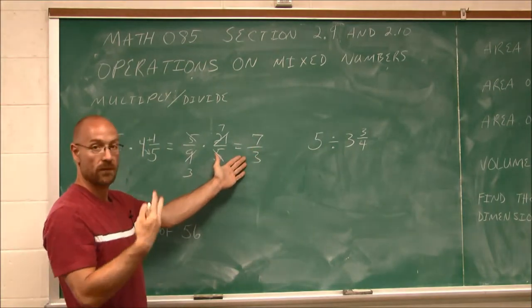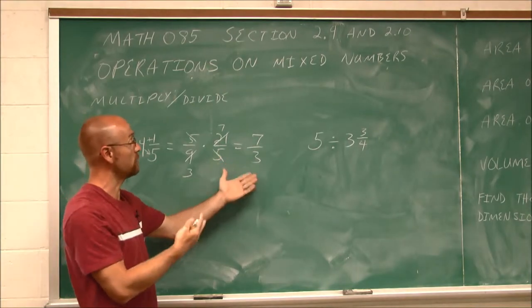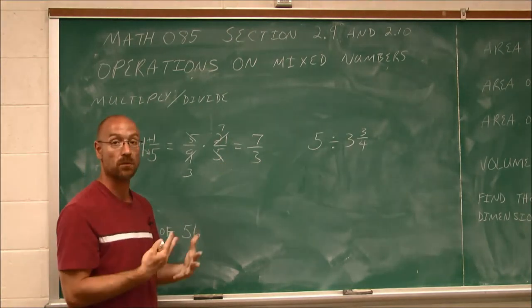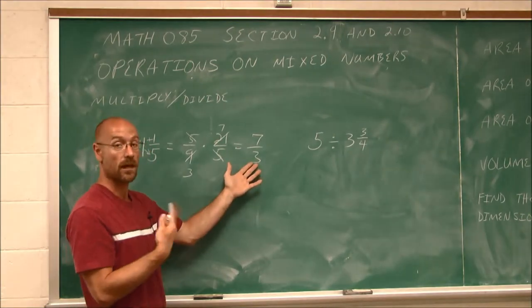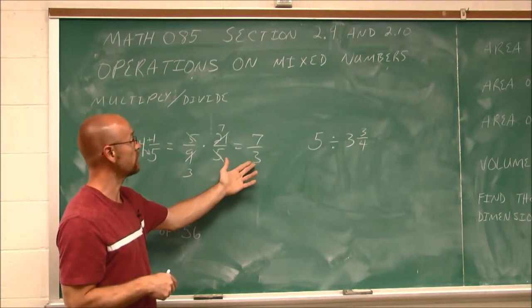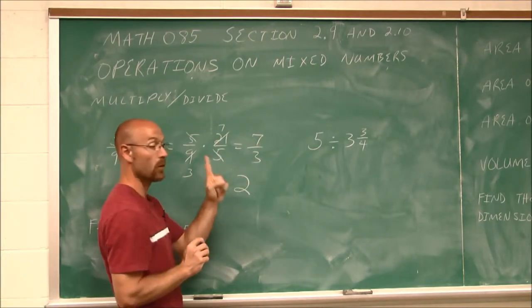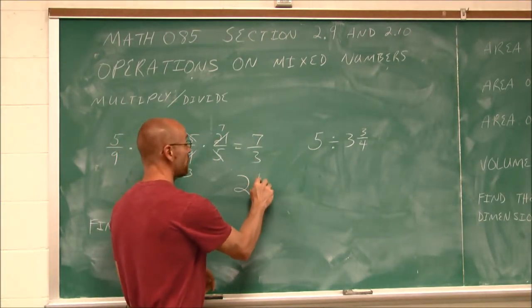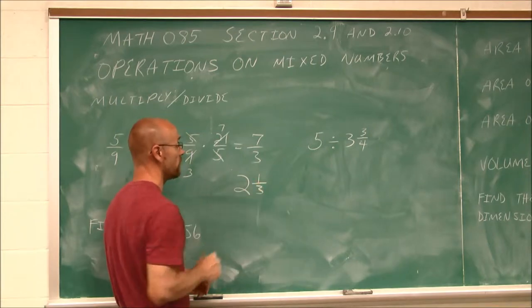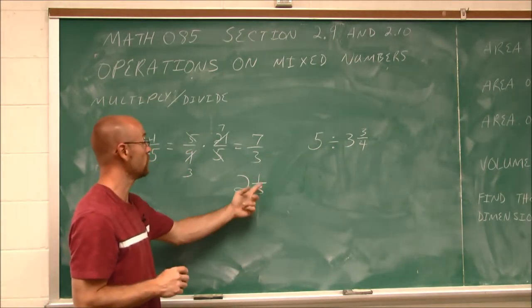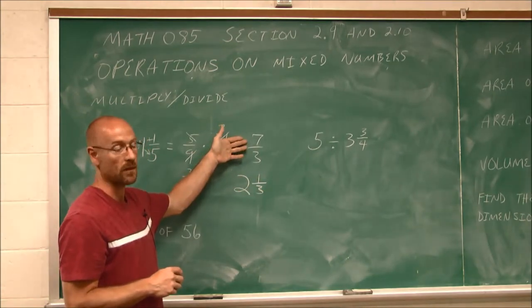Now, if I'm asked to leave my answer as an improper fraction, there it is. But if we recall in the previous video, sometimes we're asked to write our answer as a mixed number. So I can actually do the division. 3 goes into 7 twice with a remainder of 1. That remainder remains to be divided by our divisor. So I put the remainder over the divisor. 2 and 1/3 is the same thing as 7/3.